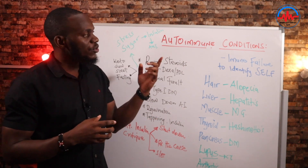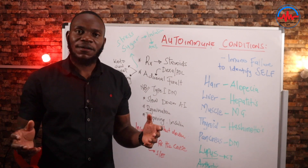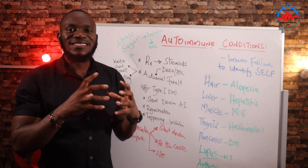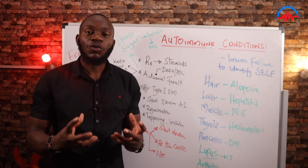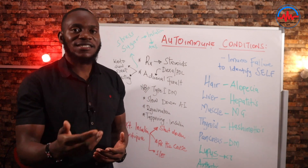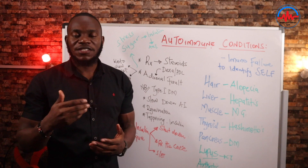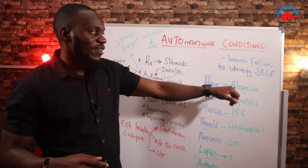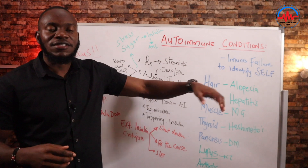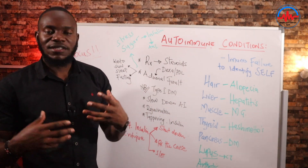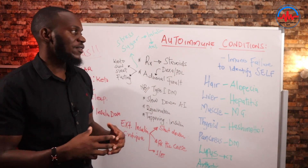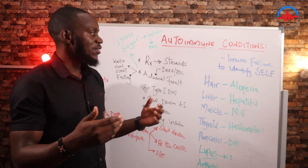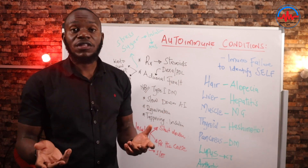In autoimmune conditions, what is happening is your own immune system has a fault. There's a fault in the immune system, and therefore it starts targeting your own cells because it fails to recognize self. So it doesn't identify self, and therefore it starts targeting it. You realize that the immune system starts attacking cells from your skin, also cells in the pancreas, and all over, even the joints.